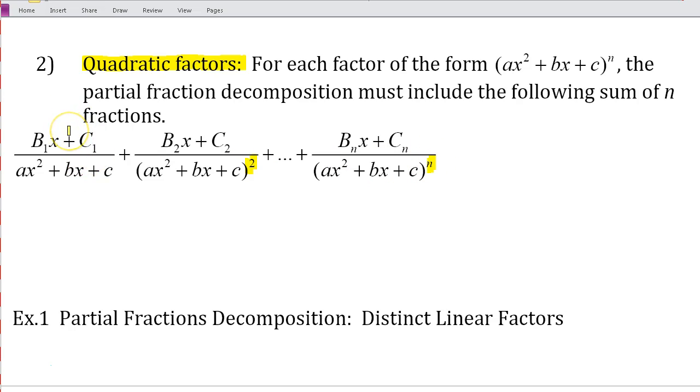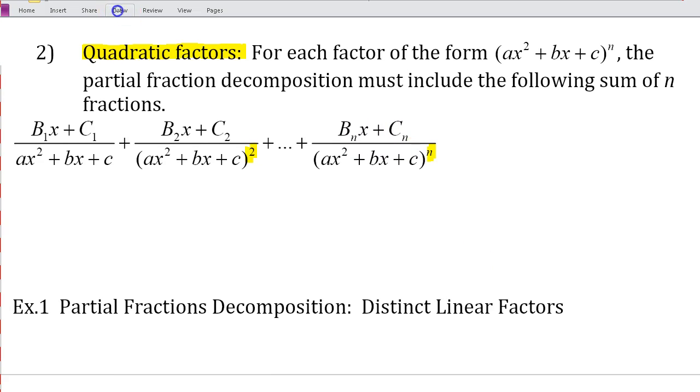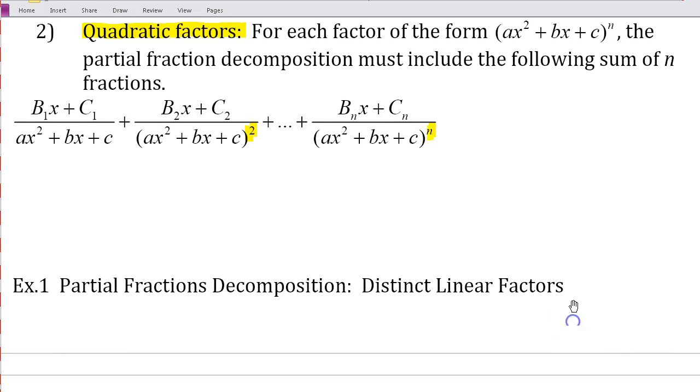And my factors in the numerator are all linear. Since my denominators are quadratic, my numerators have to be 1 degree less. So I have b sub 1x plus c1, b sub 2x plus c2, all the way up to b sub nx plus c sub n. And it looks a little confusing right now, but after you do a handful of examples, you should start to get the hang of it. Just make sure you're asking questions as you go.